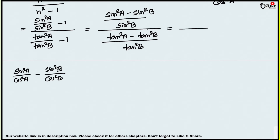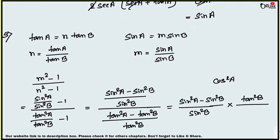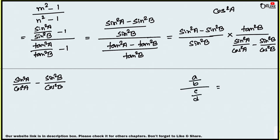Writing the full expression (m²-1)/(n²-1): numerator is (sin²a - sin²b)/sin²b and denominator is (tan²a - tan²b)/tan²b. Dividing two fractions — we write the first fraction as-is and multiply by the reciprocal of the denominator. So we get [(sin²a - sin²b)/sin²b] × [tan²b/(tan²a - tan²b)].